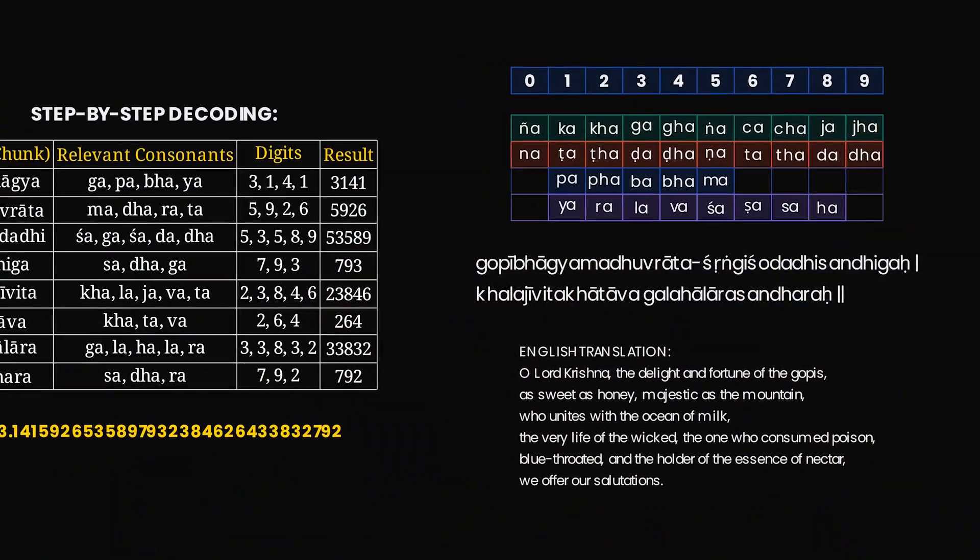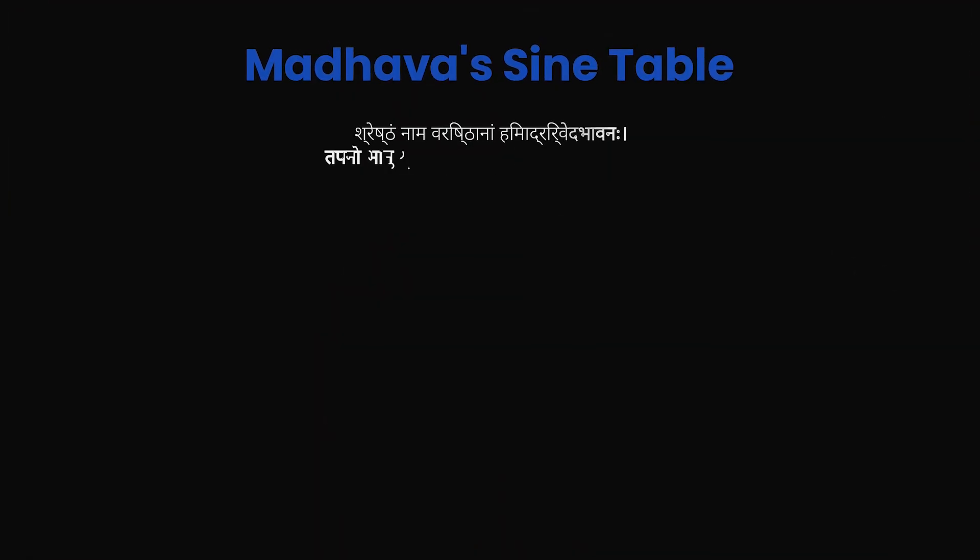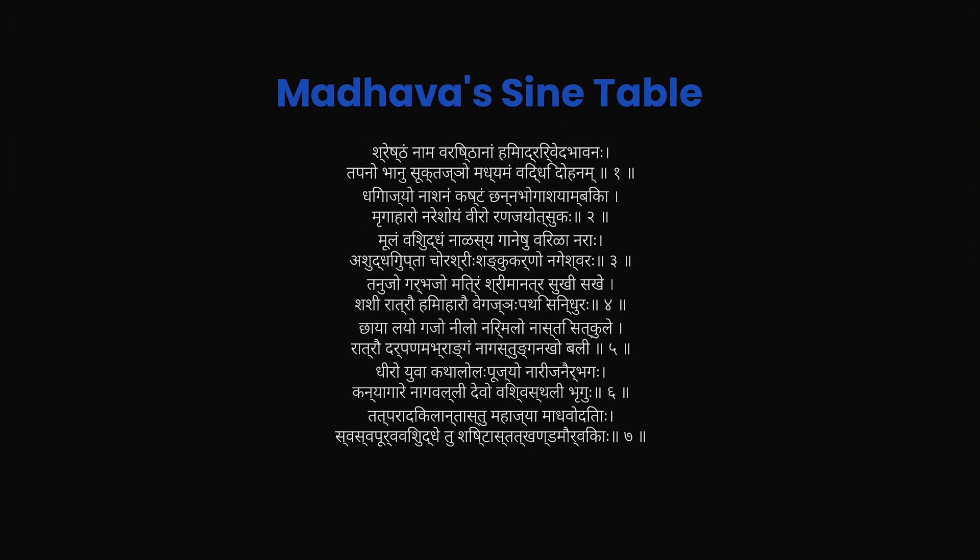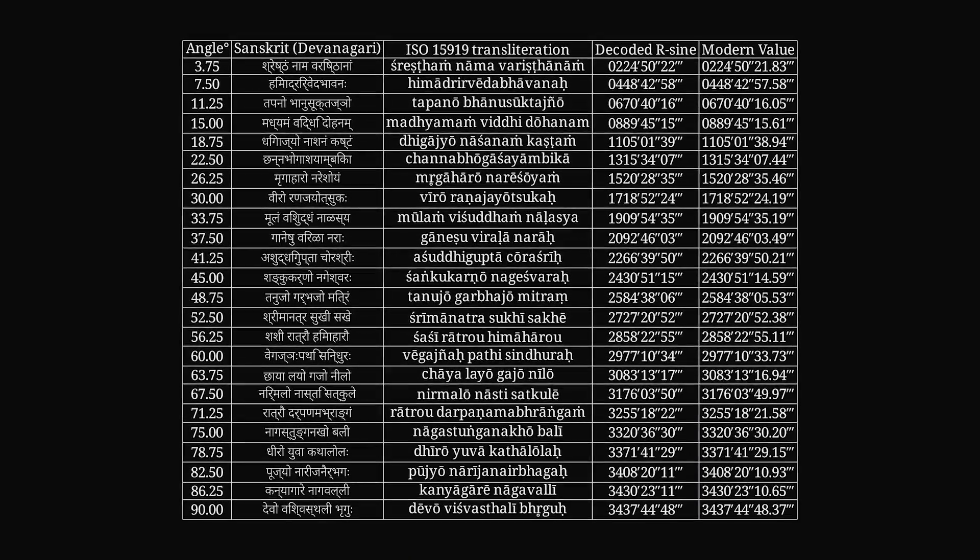This wasn't just a one-off party trick. The great mathematician Madhava also used the same system to encode the entire sine table into a single elegant verse. This was robust and serious science. And it was like a really good compression system.